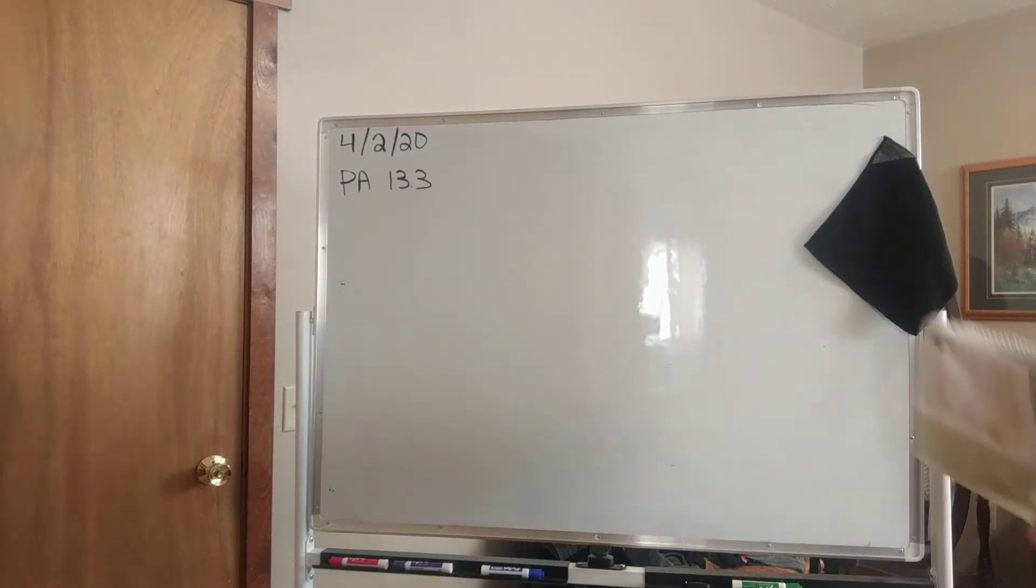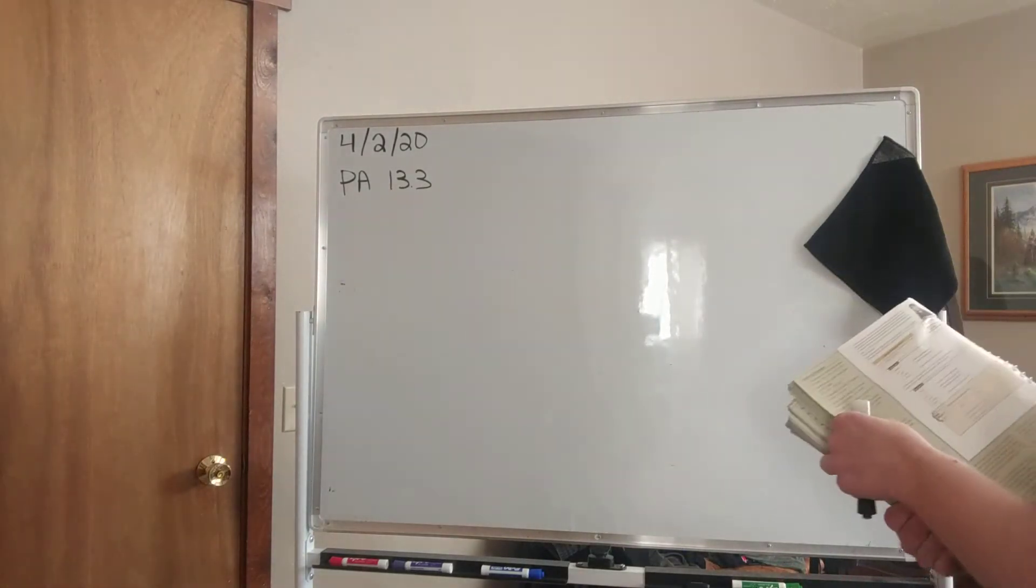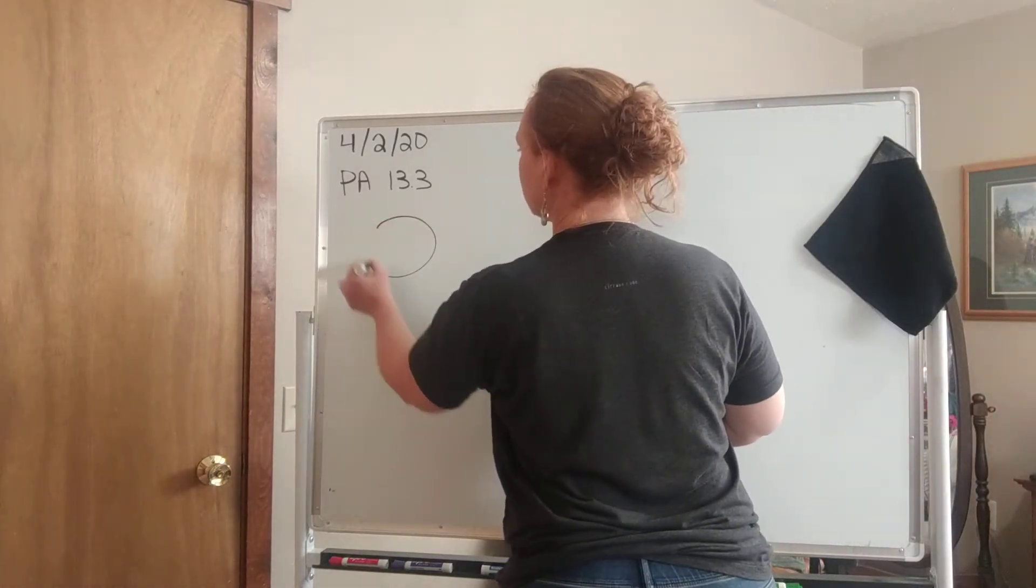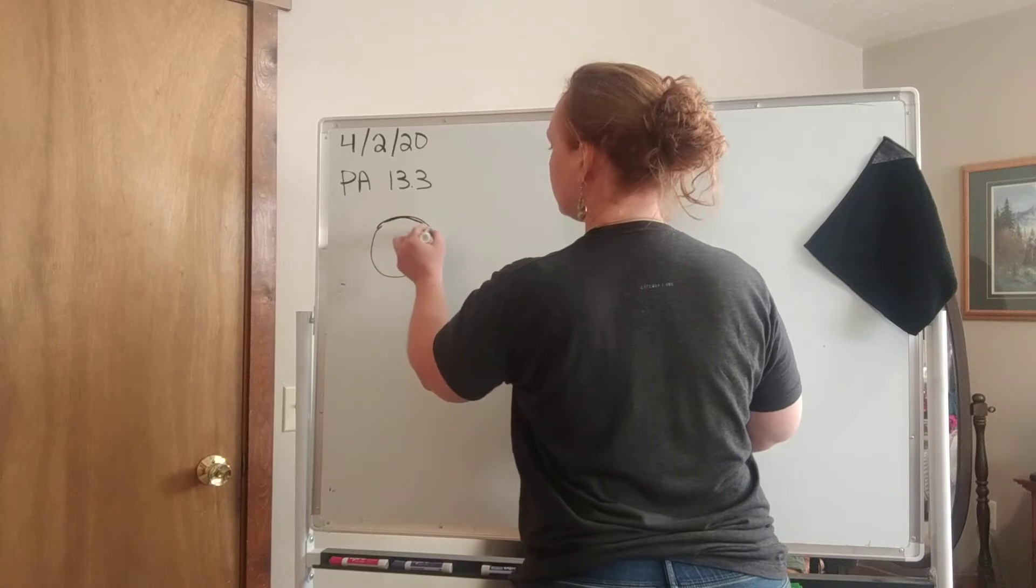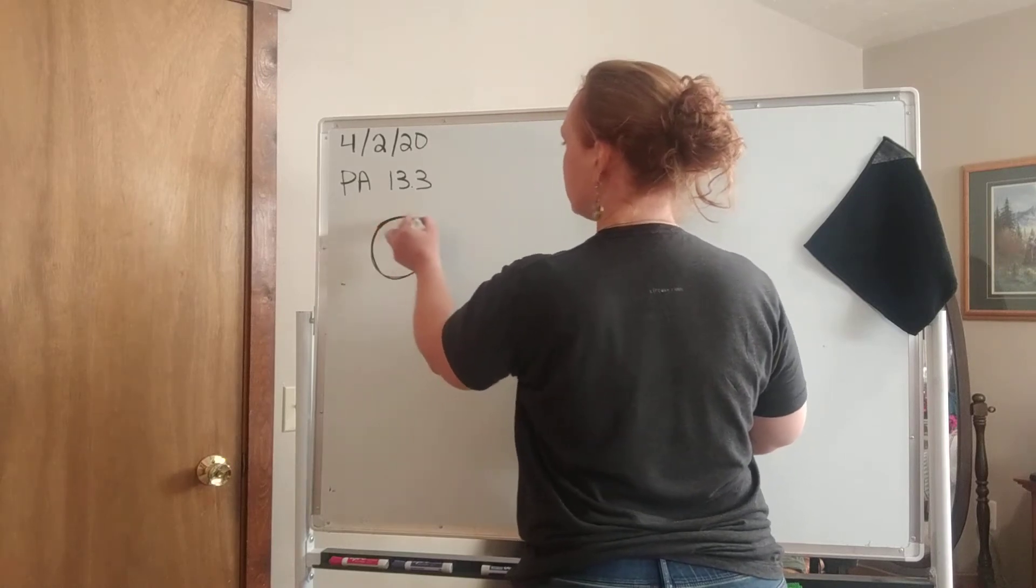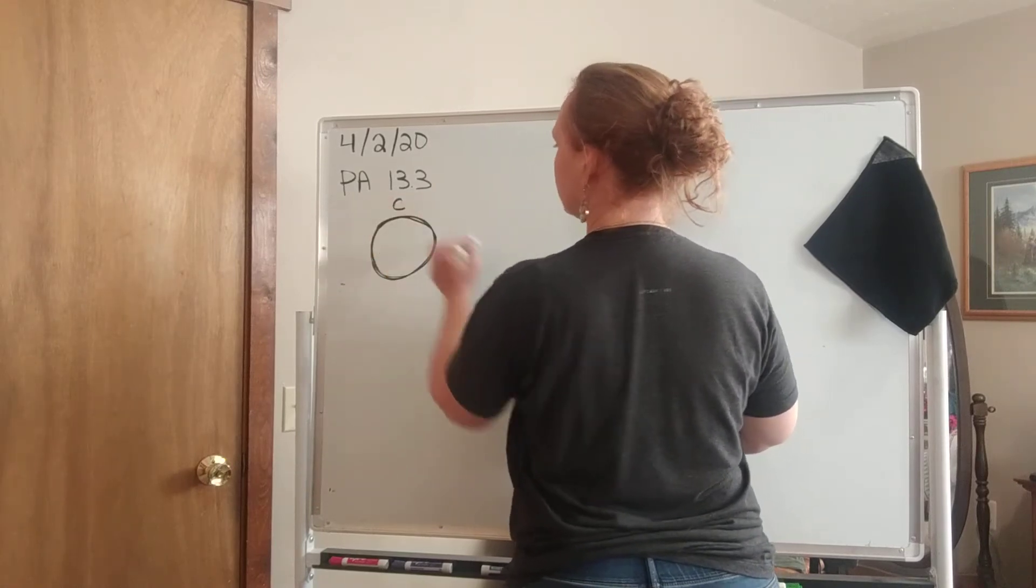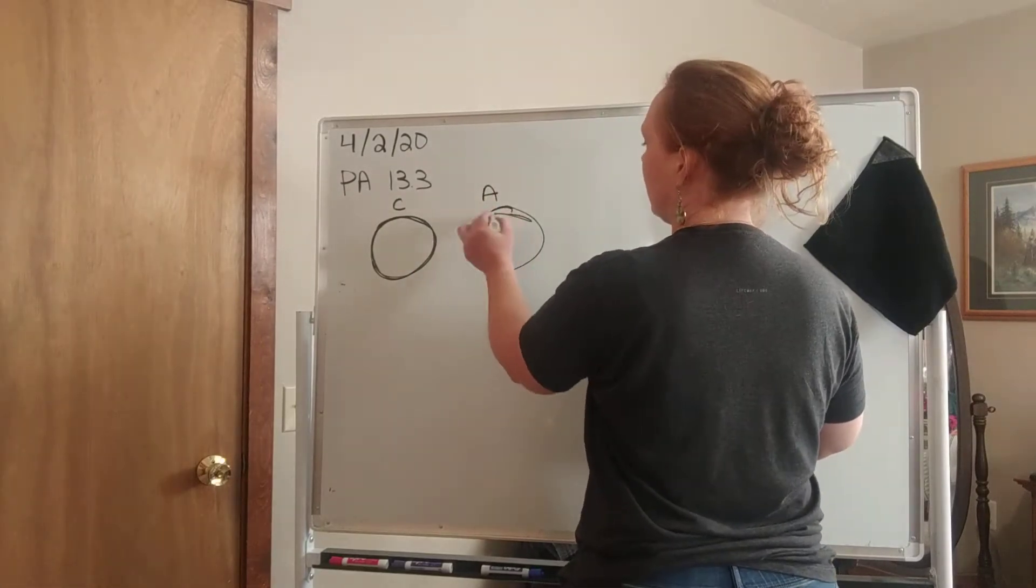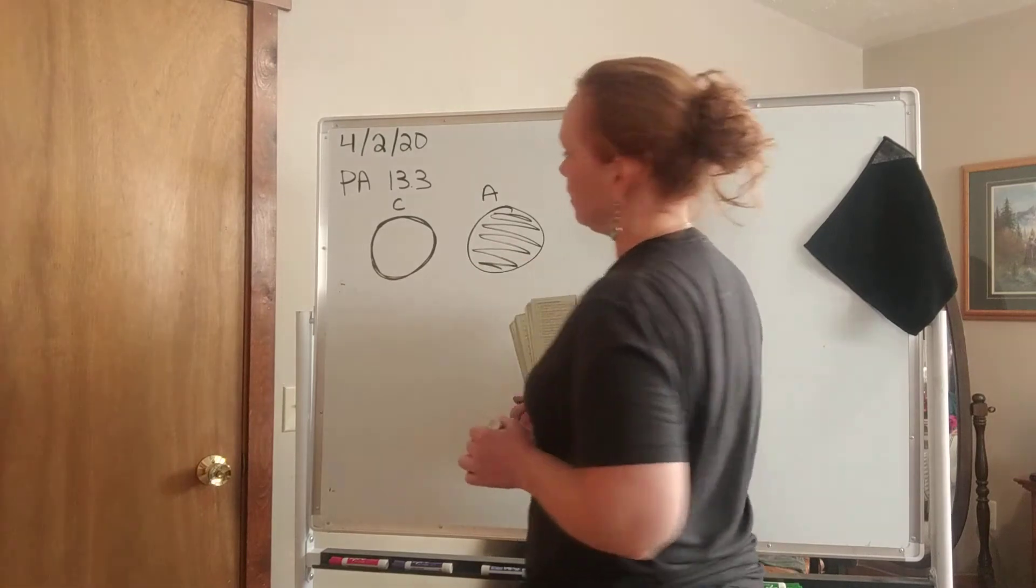Today we are doing the area of a circle. We learned circumference of a circle, and when we did circumference, remember we measured the outside of the circle. Today we're going to be doing the area of a circle, and of course area is how much is in there.